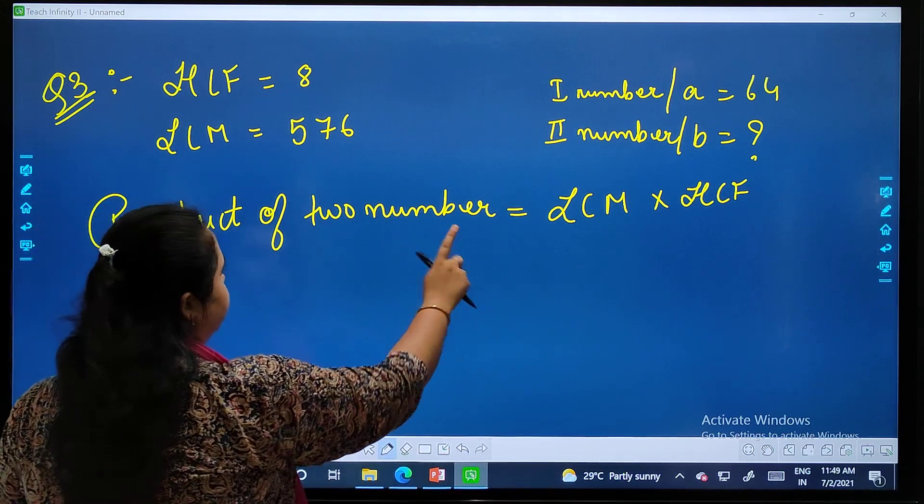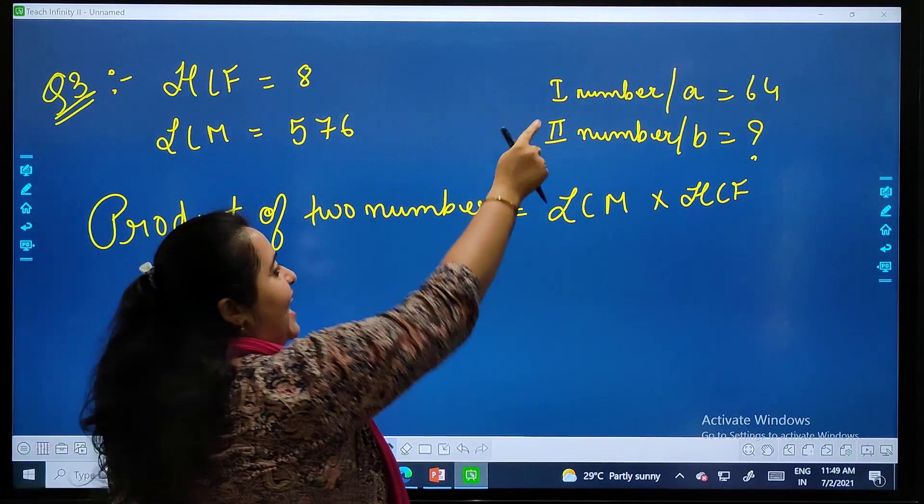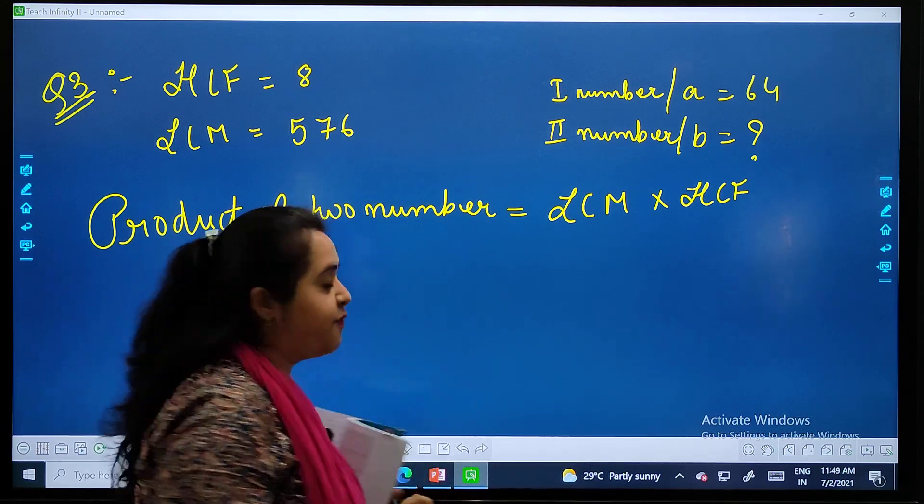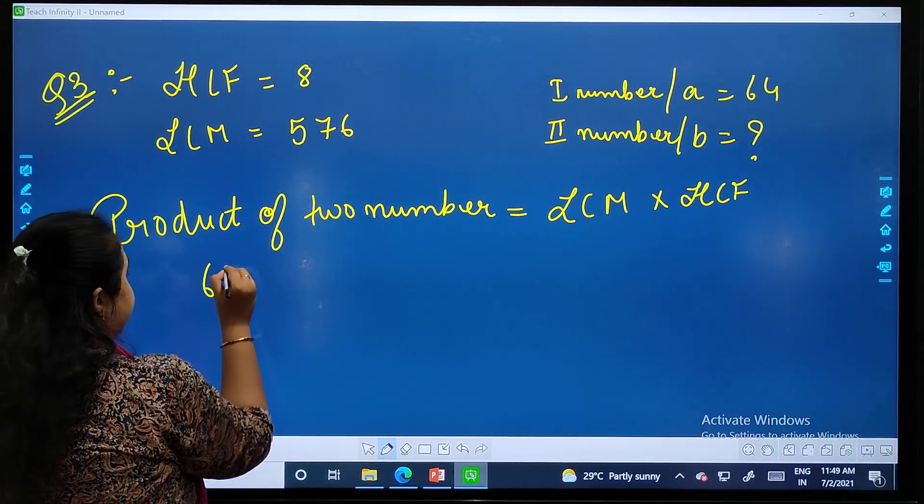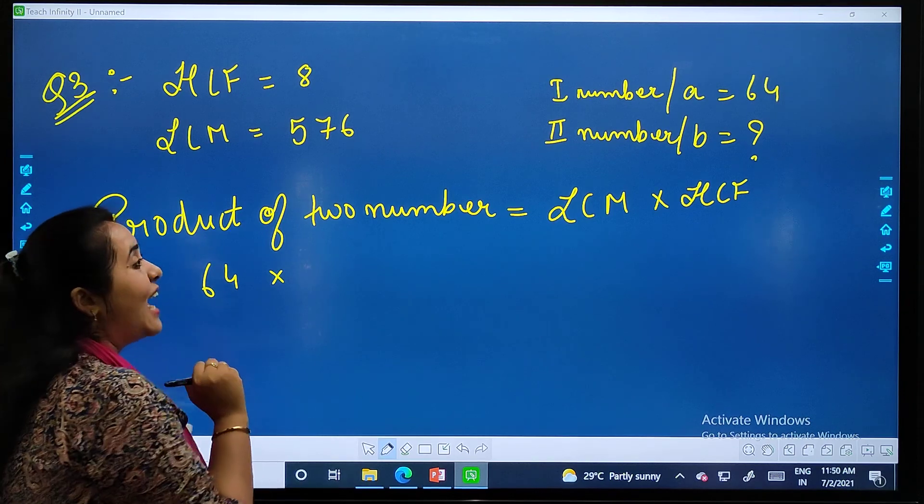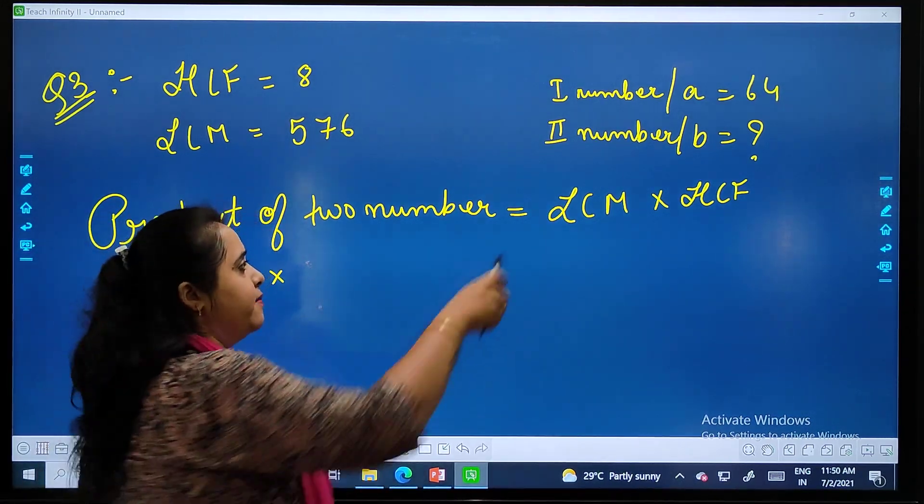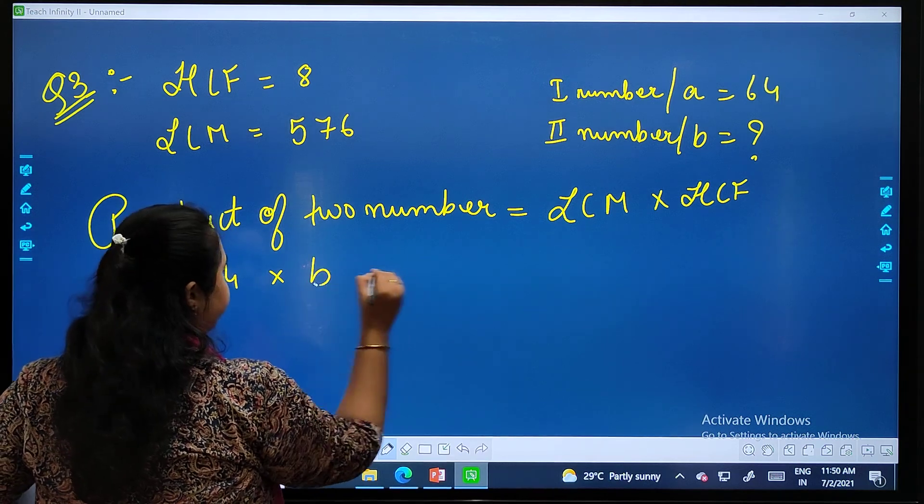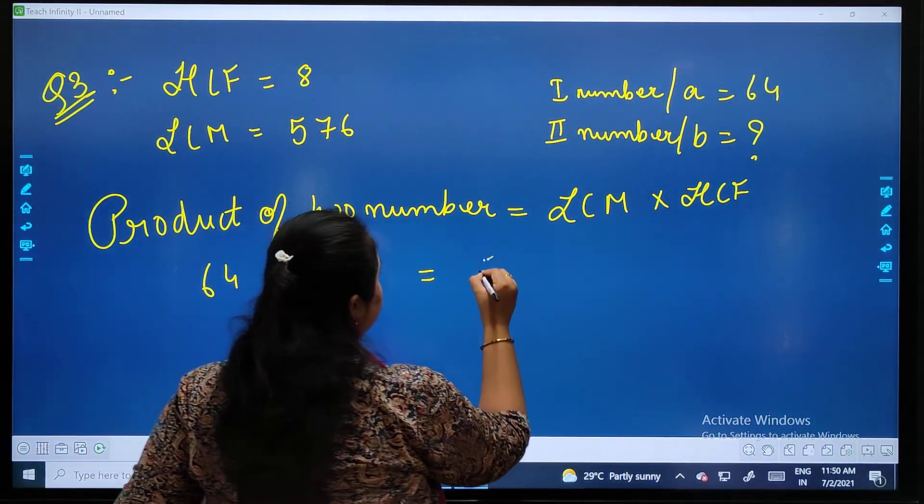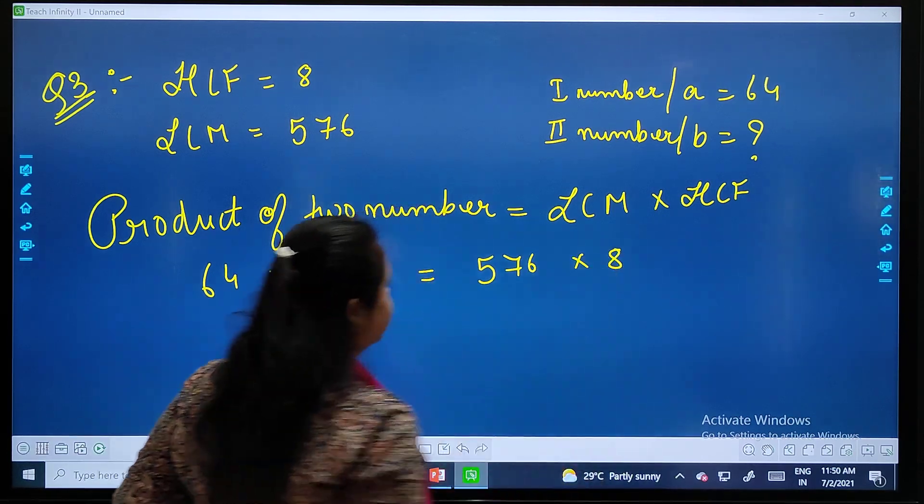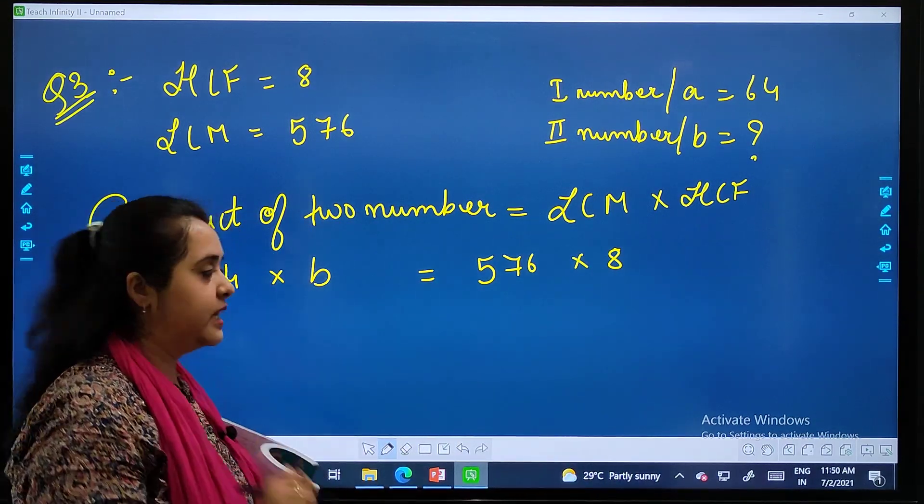Product of two numbers, that means we are talking about A and B. I have one number that is 64, so I will be writing 64 into, I don't have the second number, so I will be writing B. Then I have LCM, 576 into HCF is 8. Done, easy.